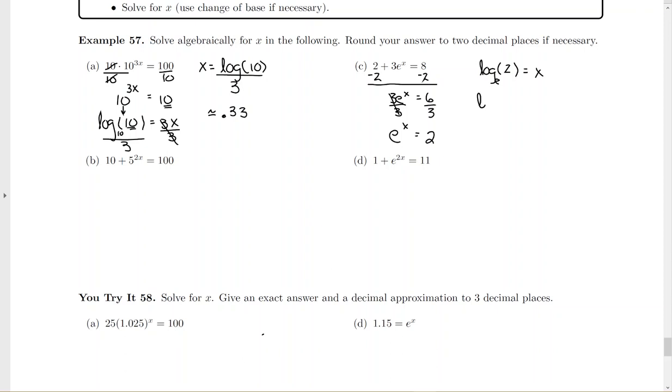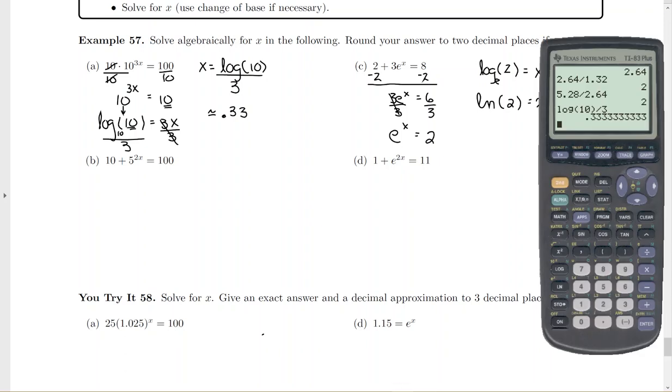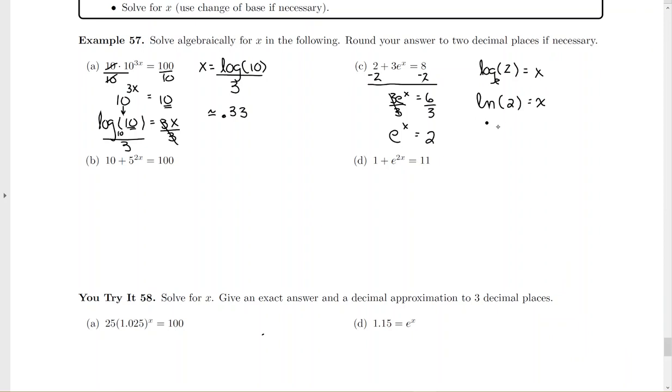Another name for log base e is natural log. And then again, you can use your calculator. Natural log of 2. And rounded to two decimal places, about 0.69. So we have our exact and we have our decimal approximation.